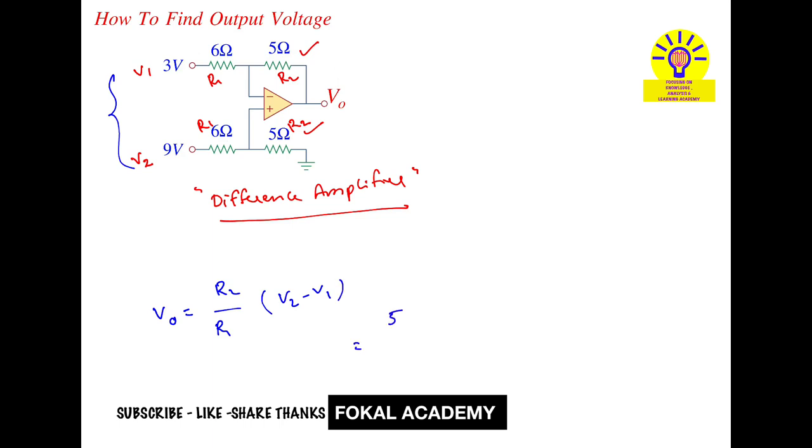That's equal to R2 is 5, 5 by 6, into V2 is 9, so 9 minus 3. So that's equal to 5 by 6 into 9 minus 3 is 6. 6 cancels and becomes 5 volts. So this is the output voltage for the given op-amp circuit.